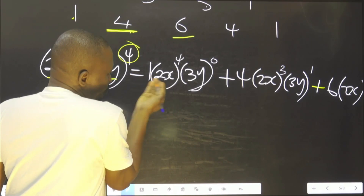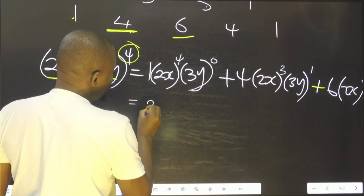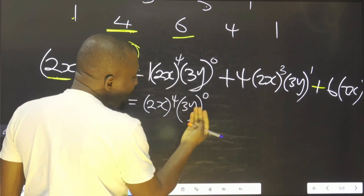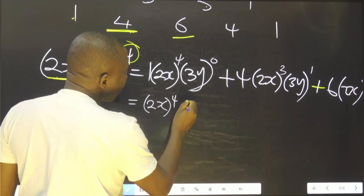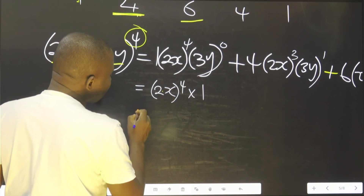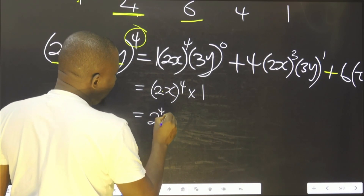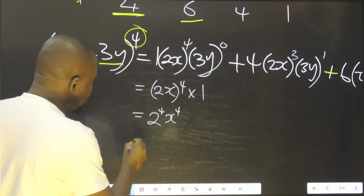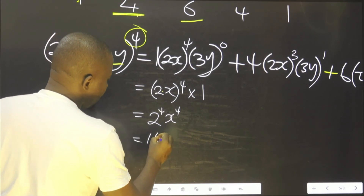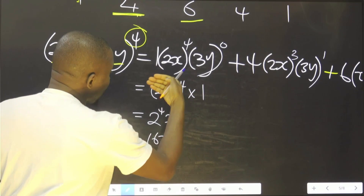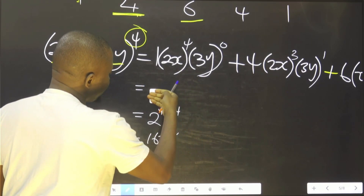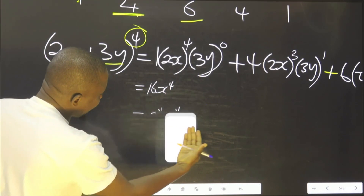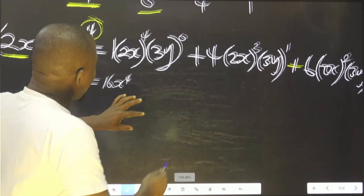This 1 does not change anything. It means we are left with 2x raised to the power 4, and 3y raised to the power 0. Anything raised to the power 0 is 1, so I can replace this by multiplied by 1. This simply means 2 raised to the power 4 multiplied by x raised to the power 4. 2 raised to the power 4 is 16. So I am going to put 16x raised to the power 4.